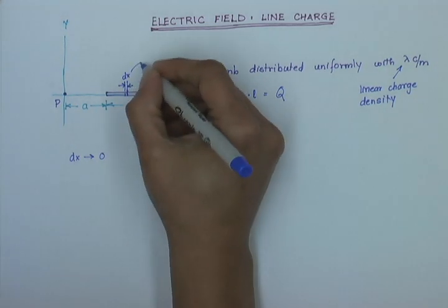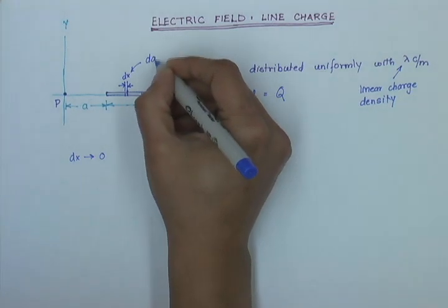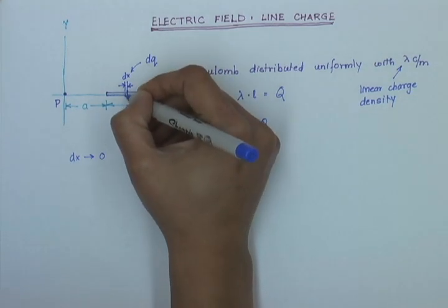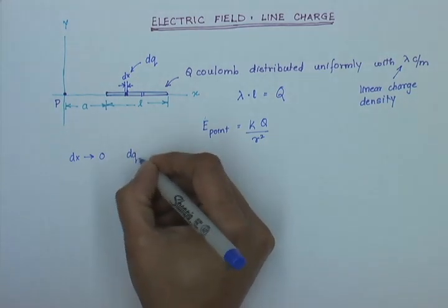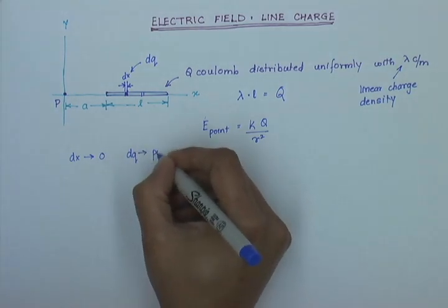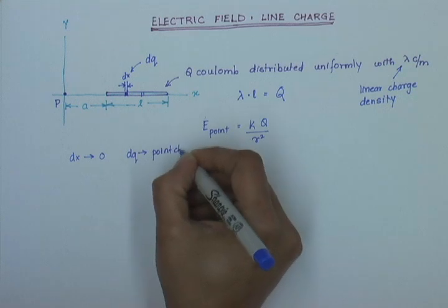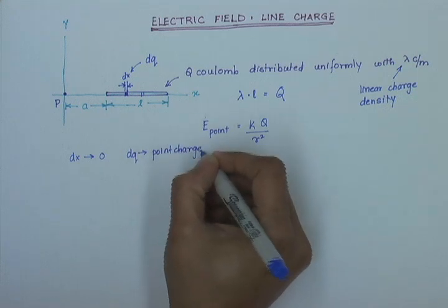...then let me say that there is a charge dq on this charge element, let me color it, then dq, I can say, approaches a point charge. And this is a fair enough approximation.